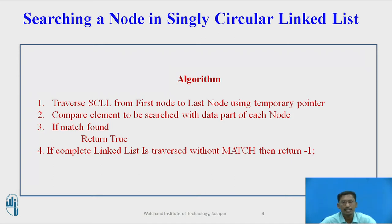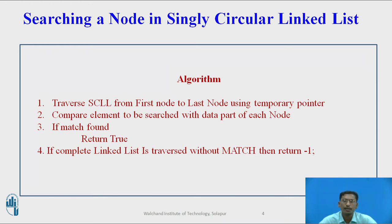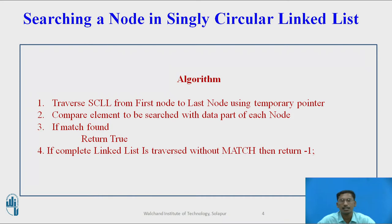Step 1: traverse the singly circular linked list from the first node to the last node using a temporary pointer. The first node is identified using the start or head pointer, which is the only global pointer used in a singly circular linked list. The last node is a node whose next pointer holds the address of the first node, or start.